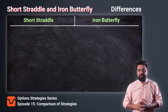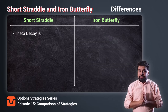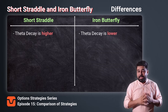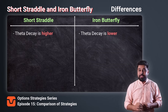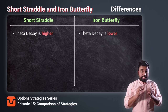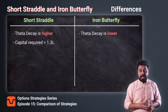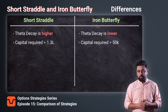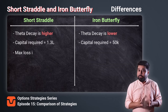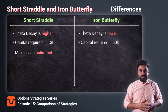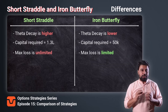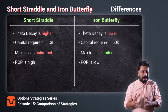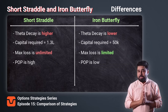Now let us look at the differences between these two strategies. Number one, the Theta decay is higher in the Short Straddle strategy as you sell naked calls and naked put options and don't hedge your positions like in the Iron Butterfly strategy. Number two, the capital requirement of Short Straddle is 1.3 lakhs and capital requirement for Iron Butterfly is around 50,000 rupees. Number three, the max loss is unlimited in the Short Straddle strategy whereas it is predefined in the Iron Butterfly strategy. Number four, POP or the probability of profit is higher for Short Straddle strategy than Iron Butterfly strategy.